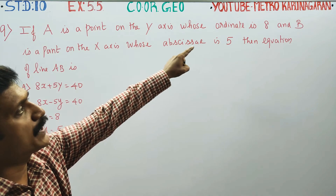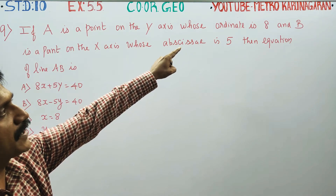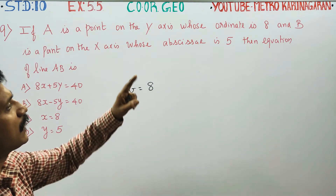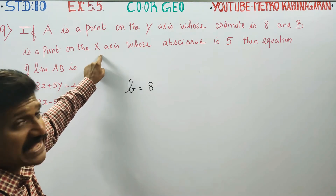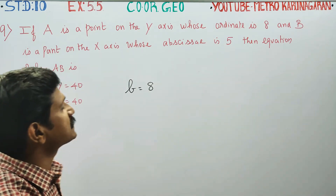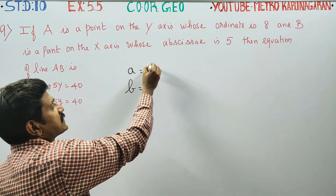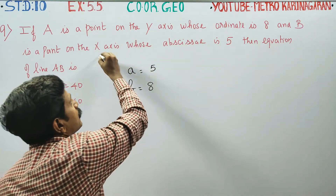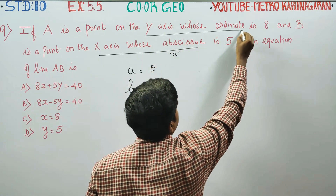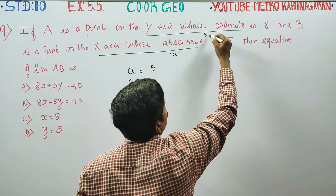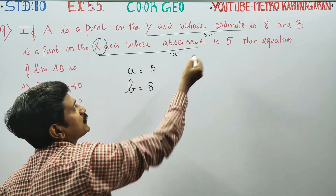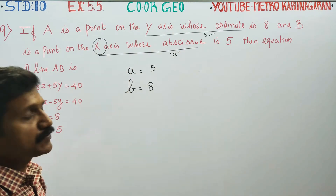The y-axis value is called the y-intercept, and 'ordinate' means y-intercept — denoted by the letter b. So b is equal to 8. The x-axis value is called the x-intercept, and 'abscissa' means x-intercept — denoted by the letter a. So a is equal to 5.